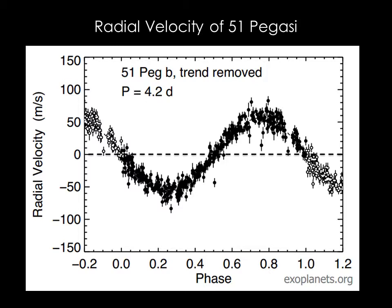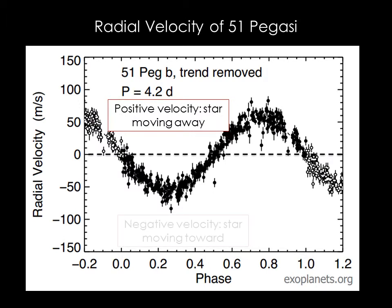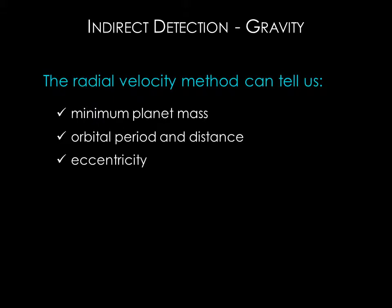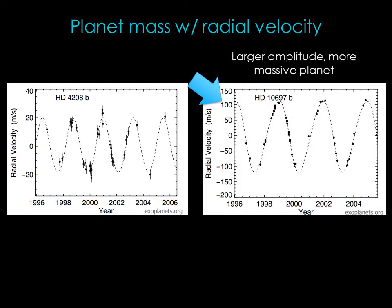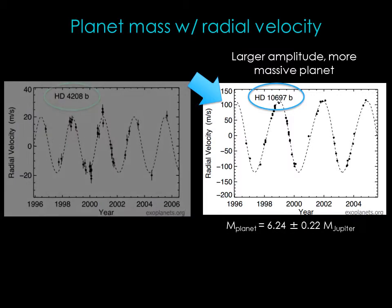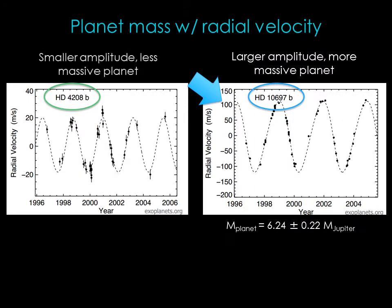Here is a plot of 51 Pegasi's radial velocity over time. When the velocity is positive, the star is moving away from us and the light is red shifted; when the velocity is negative, the star is moving toward us and the light is blue shifted. The radial velocity method can tell us about a planet's mass, orbital period, distance from a star, and eccentricity. Looking at Doppler shift data for two stars with similar periods — meaning their planets take about the same time to complete one orbit — the star on the right has a big radial velocity, indicating a more massive planet. Planet HD 10697b is over six Jupiter masses, while planet HD 4208b is less than one tenth of a Jupiter mass.